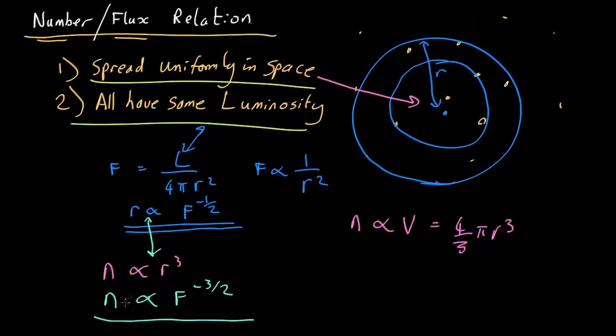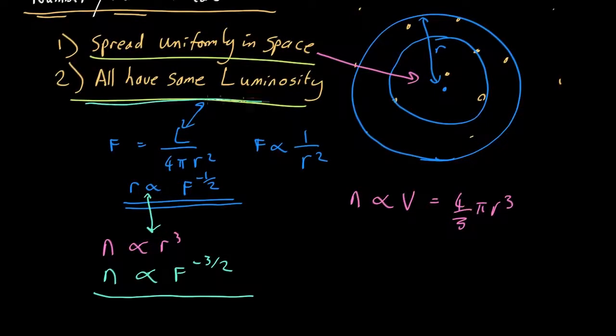So what that's telling us is that if our two assumptions hold, if we see a brighter one, it must be closer. According to this equation here, and if it's closer, we can only see things of that brightness over a smaller volume, so we're going to see less of them. So it's going to tell us that as you get brighter, a brighter observed flux, the number should go down as the minus 3 halves power.